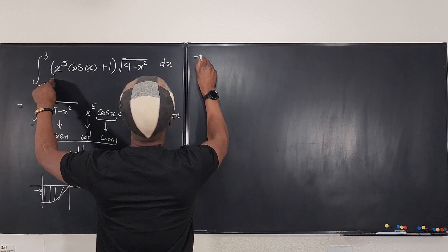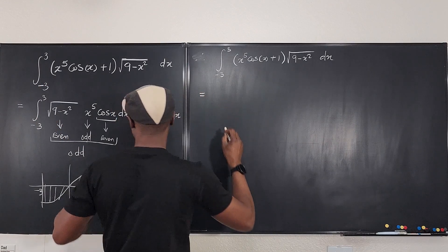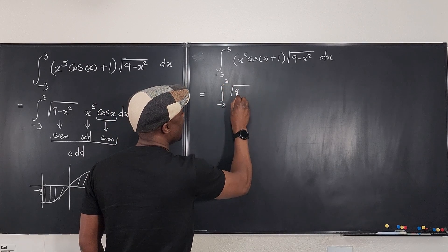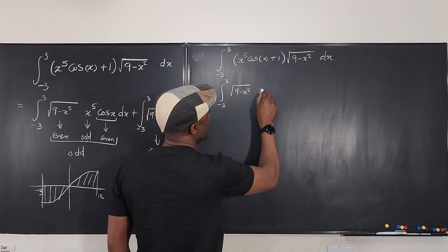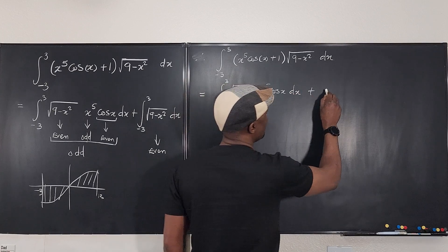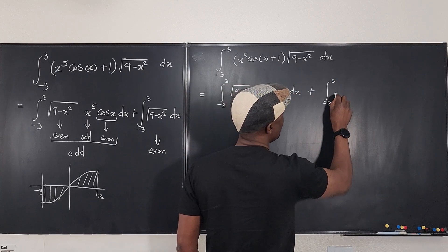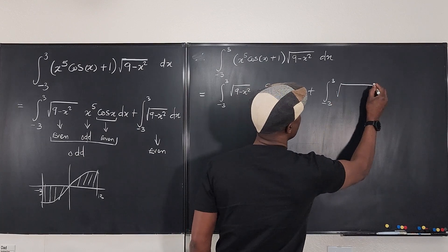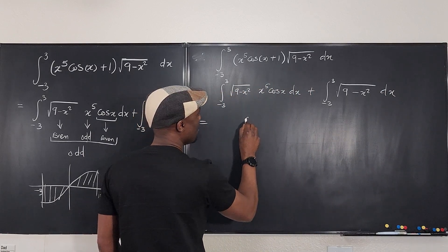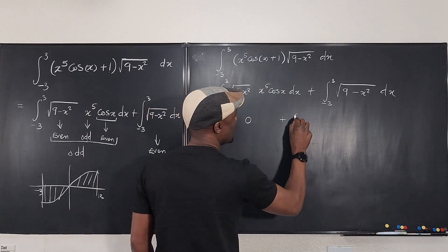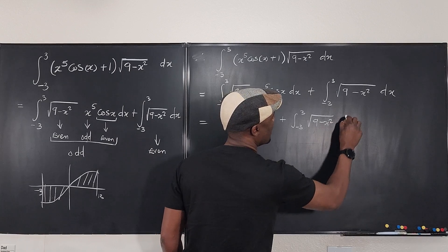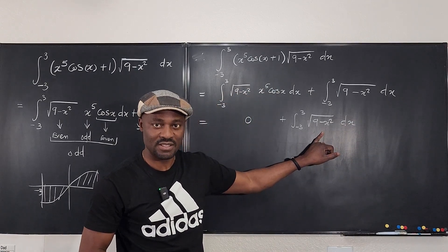So this implies the original integral equals the integral from negative three to three of √(9 − x²) · x⁵ cos x dx, plus the integral from negative three to three of √(9 − x²) dx, which equals zero plus the integral from negative three to three of √(9 − x²) dx. So all you need to integrate is this second part.